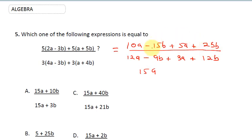So 10a plus 5a is going to give me 15a. Then we have minus 15b plus 25b. If you do plus 25 minus 15, you get plus 10b. All over, this will be 12a plus 3a, we're going to get 15a. And we'll have minus 9b plus 12b, so plus 12b minus 9b will give me 15a plus 3b. So this is my final answer. I'll take from here, option A is the correct answer.